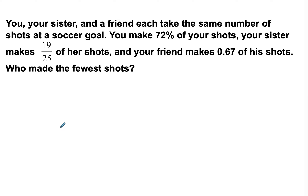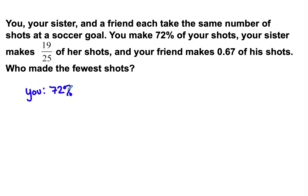For a second type of problem, here we have a story problem. You, your sister, and a friend each take the same number of shots at a soccer goal. You make 72 percent of your shots, your sister makes 19/25 of her shots, and your friend makes 67 hundredths of his shots. Who made the fewest shots? We need to put them all into the same form, so we list them: you — 72 percent, sister — 19/25, friend — 0.67.